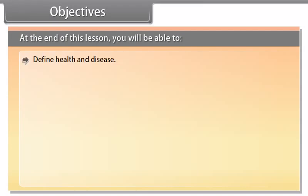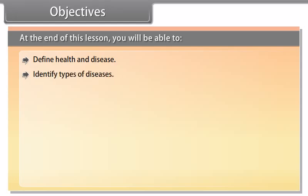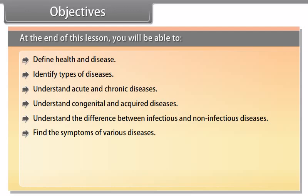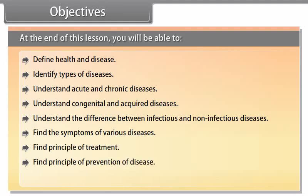At the end of this lesson, you will be able to define health and disease, identify types of diseases, understand acute and chronic diseases, understand congenital and acquired diseases, understand the difference between infectious and non-infectious diseases, find the symptoms of various diseases, find the principle of treatment, find the principle of prevention of disease, and understand vaccination.